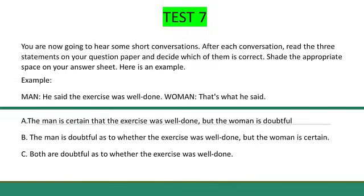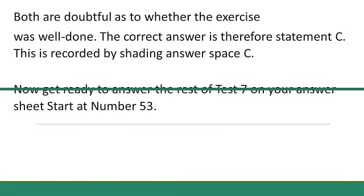Test 7. You are now going to hear some short conversations. After each conversation, read the three statements on your question paper and decide which of them is correct. Shade the appropriate space on your answer sheet. Here is an example. He said the exercise was well done. That's what he said. Both are doubtful as to whether the exercise was well done. The correct answer is therefore statement C. This is recorded by shading answer space C. Now get ready to answer the rest of test 7 on your answer sheet. Start at number 53.